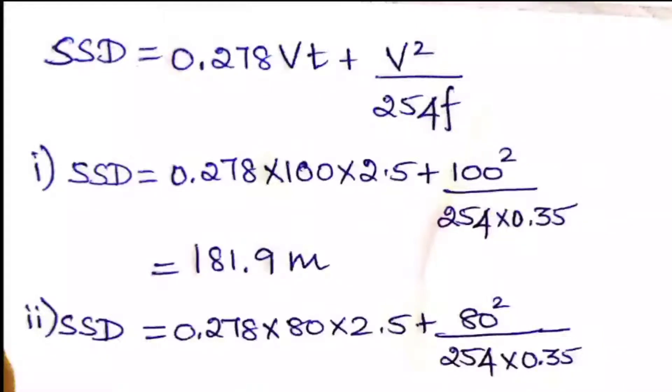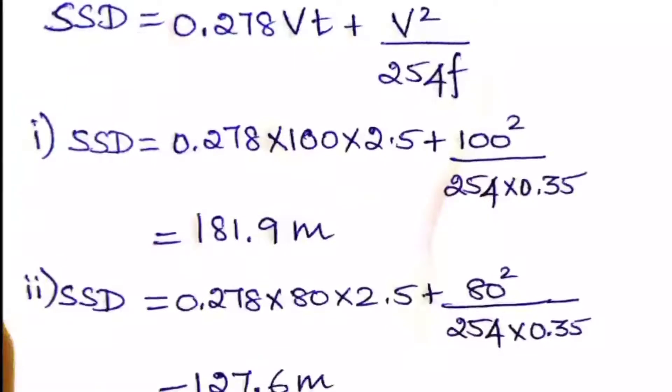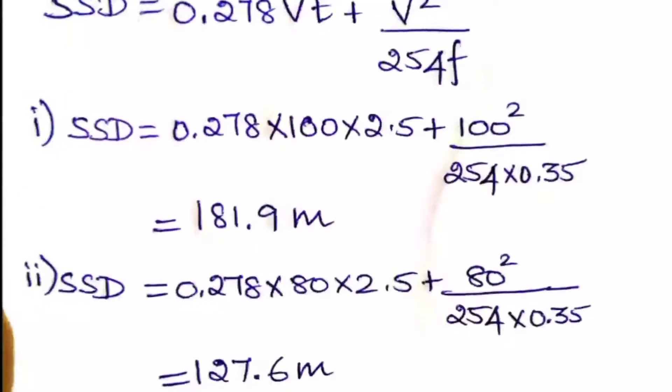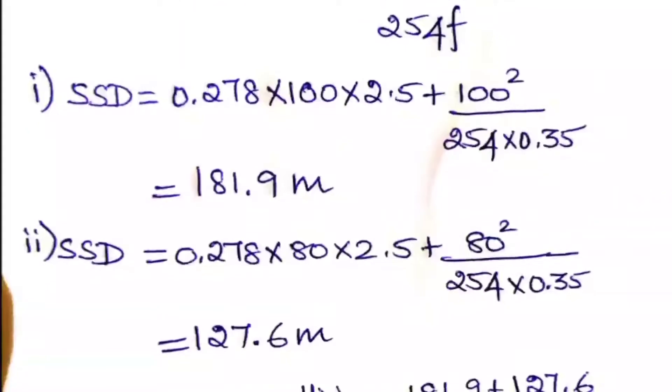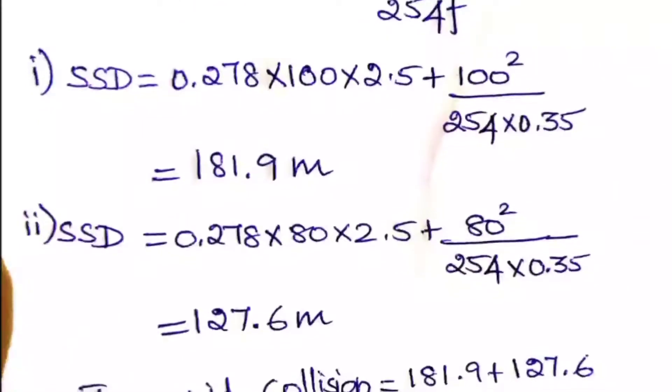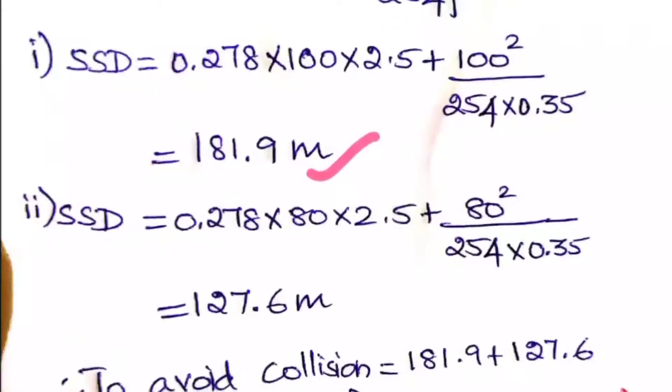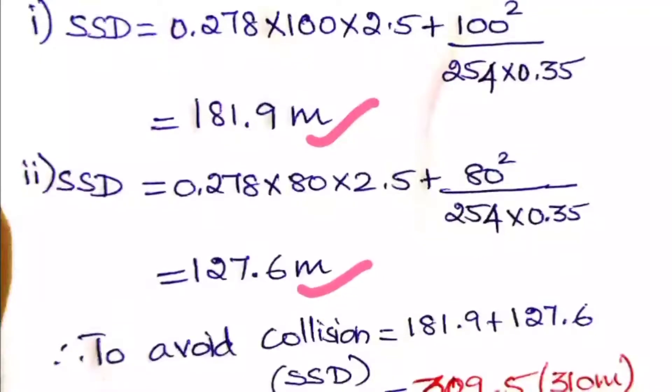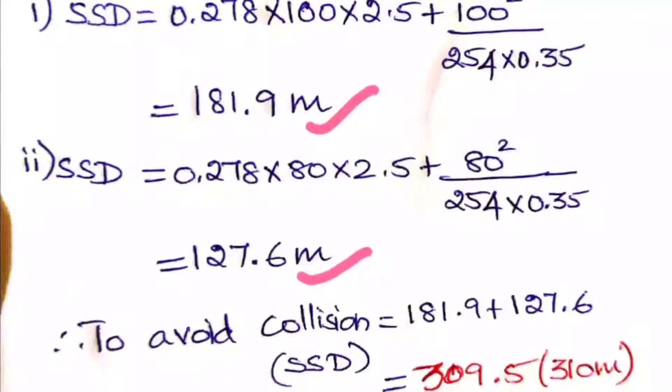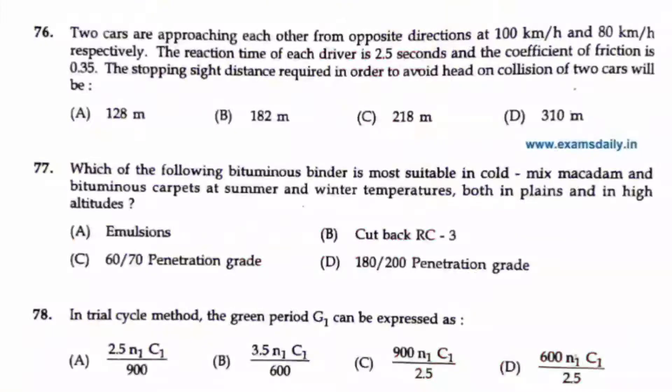So the SSD has to be calculated for the stopping sight distance, but the question asks to avoid the head-on collision. So we have to calculate the SSD for both vehicles that are oppositely coming and the summation of that will be the distance to avoid the collision. For the first SSD, 0.278 times V, the speed of the vehicle that is 100 km per hour, times T is 2.5 seconds, that is the reaction time, plus V squared by 254F. F they have given as 0.35. So you will get the answer is 181.9 meter. And for the second vehicle with the speed of 80 km per hour, we will get the answer is 127.6 meter. So to avoid collision, the sum of these two will be 309.5 meters, so approximately 310 meter. Option D is the right answer here.